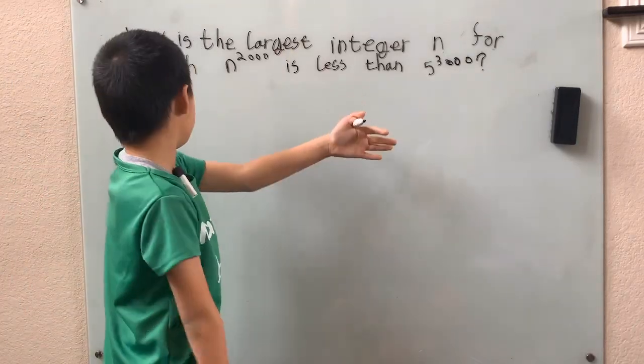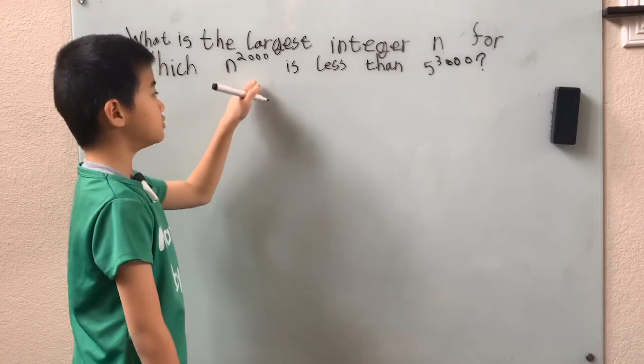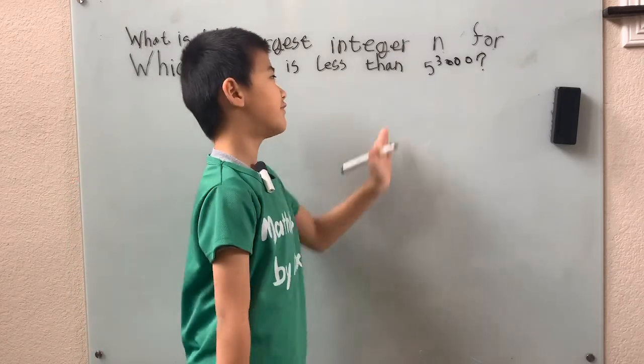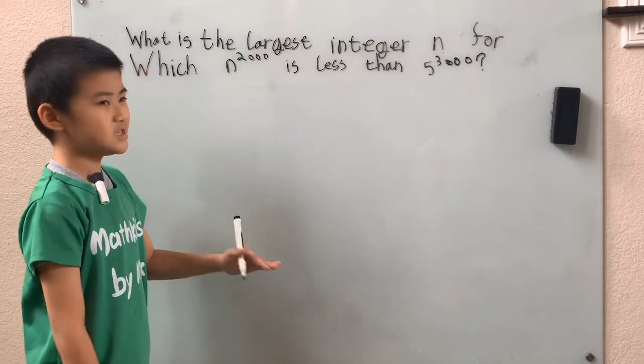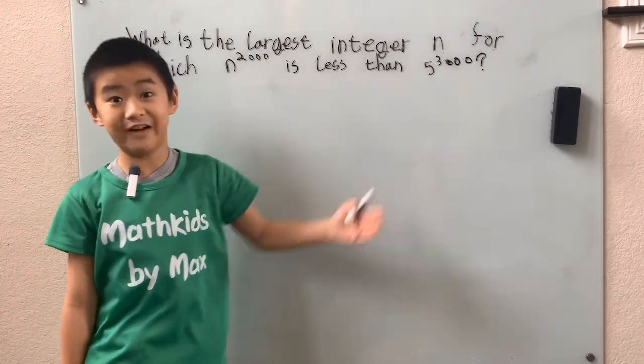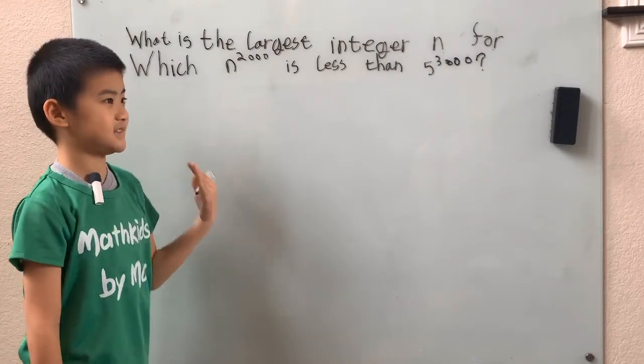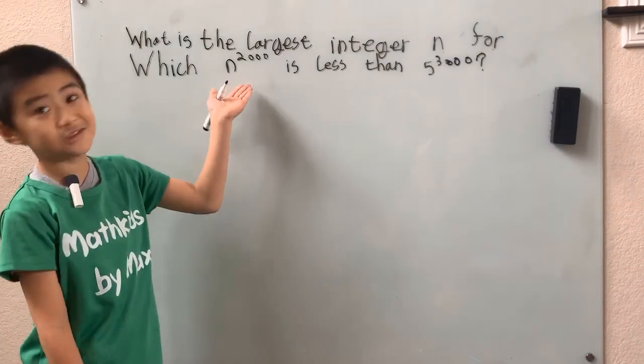What is the largest integer n for which n to the 2,000 is less than 5 to the 3,000? At first we don't want to actually multiply 3,000 fives and then have to test like 6, 7, 8 and then multiply 2,000 of those.